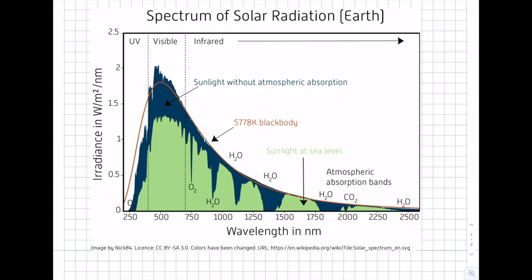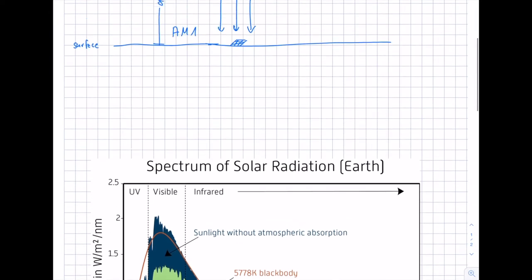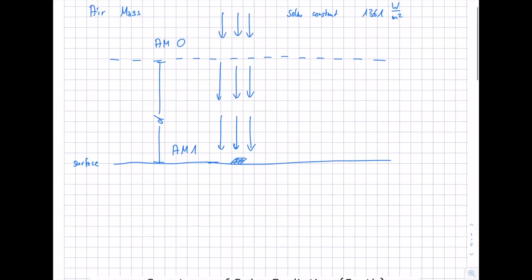Going back to the figure, the radiation passes the atmosphere one time — the height of the atmosphere once — which we call air mass one. This only occurs when the sun's elevation angle is perpendicular to the surface. If we define the elevation angle as gamma, then when gamma equals 90 degrees, this represents an air mass of one.